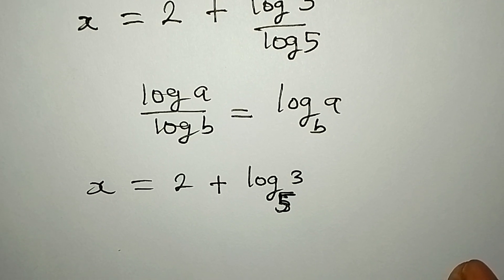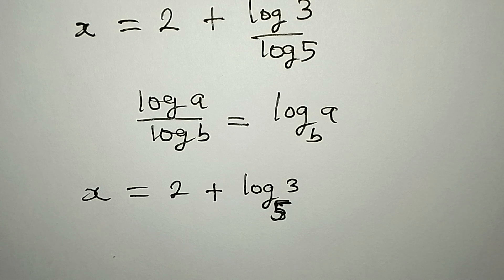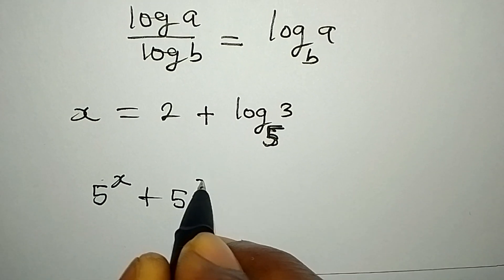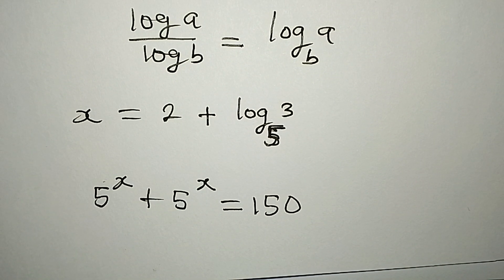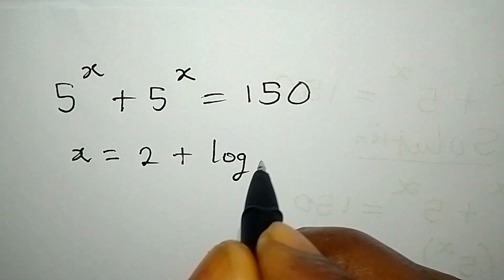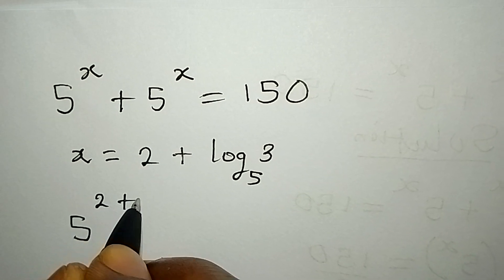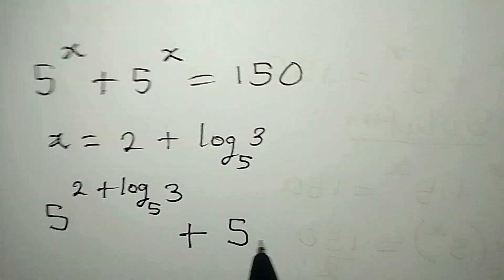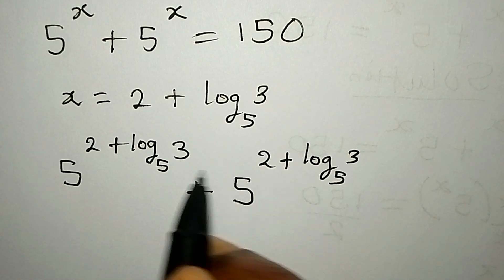So x equals 2 plus log 3 to base 5 is our value of x. To confirm, we go back to 5 to the power of x plus 5 to the power of x equals 150 and substitute in x equals 2 plus log 3 to base 5. We get 5 to the power of (2 plus log 3 to base 5) plus 5 to the power of (2 plus log 3 to base 5), and we want to verify this equals 150.